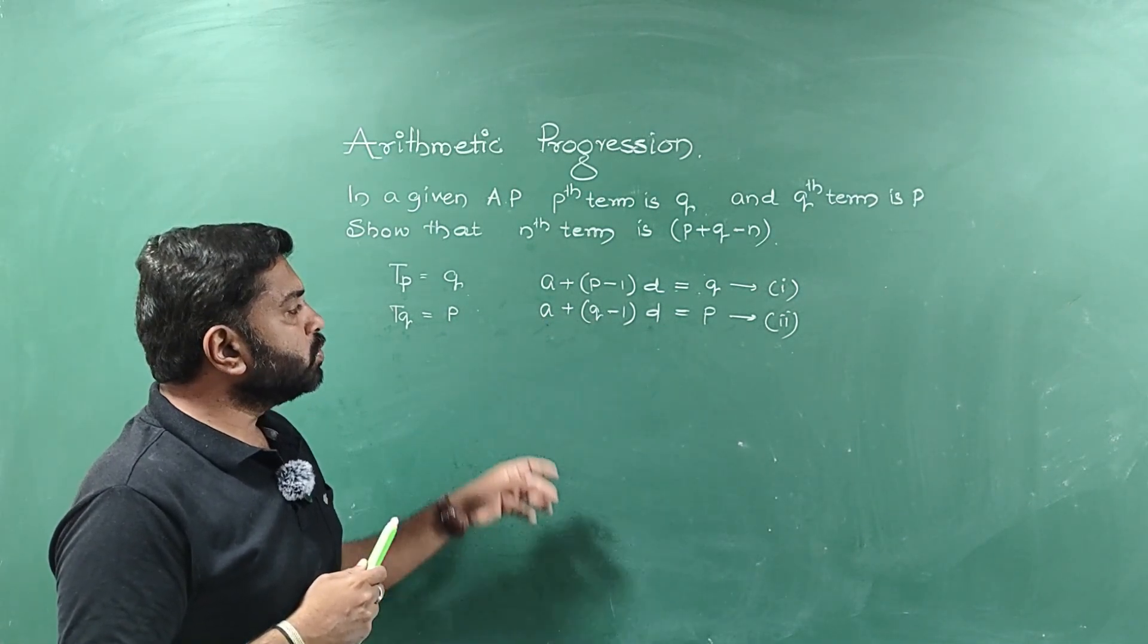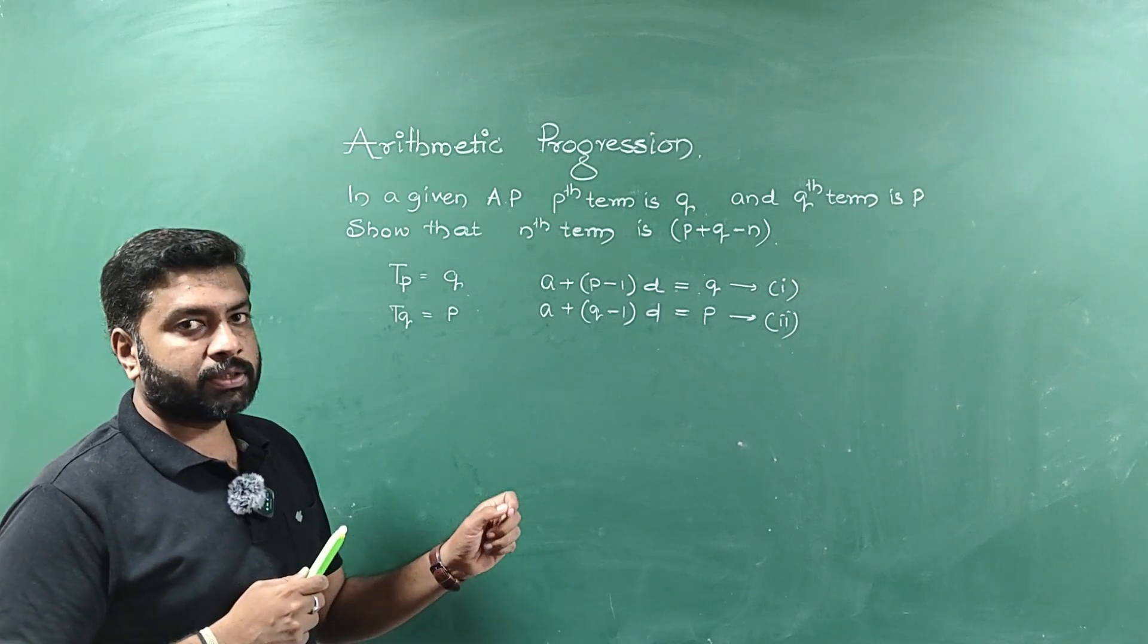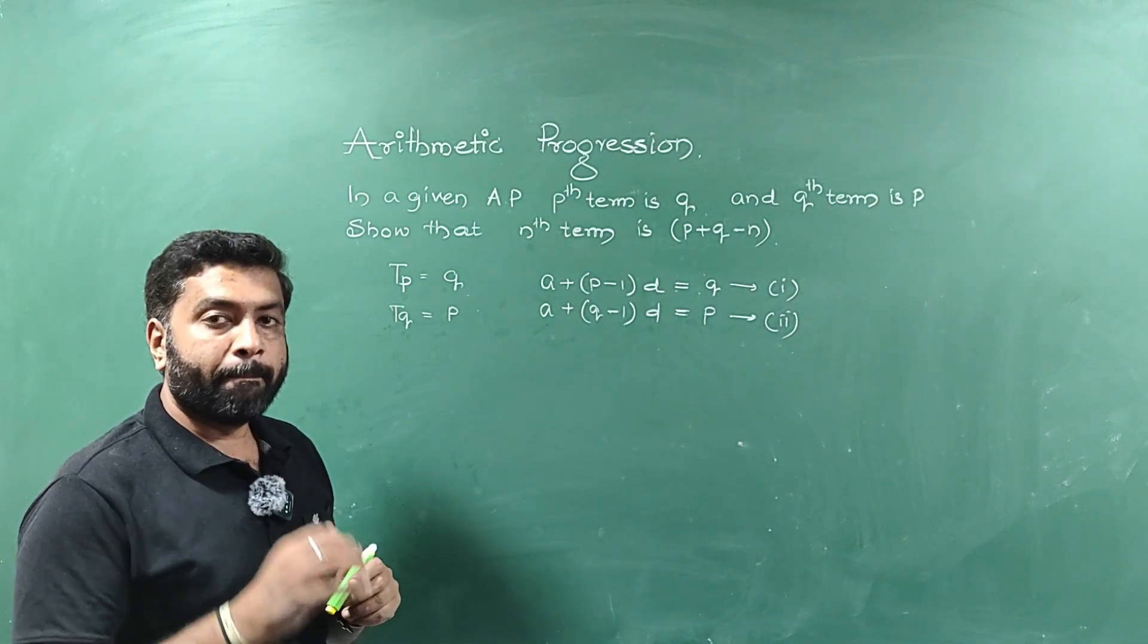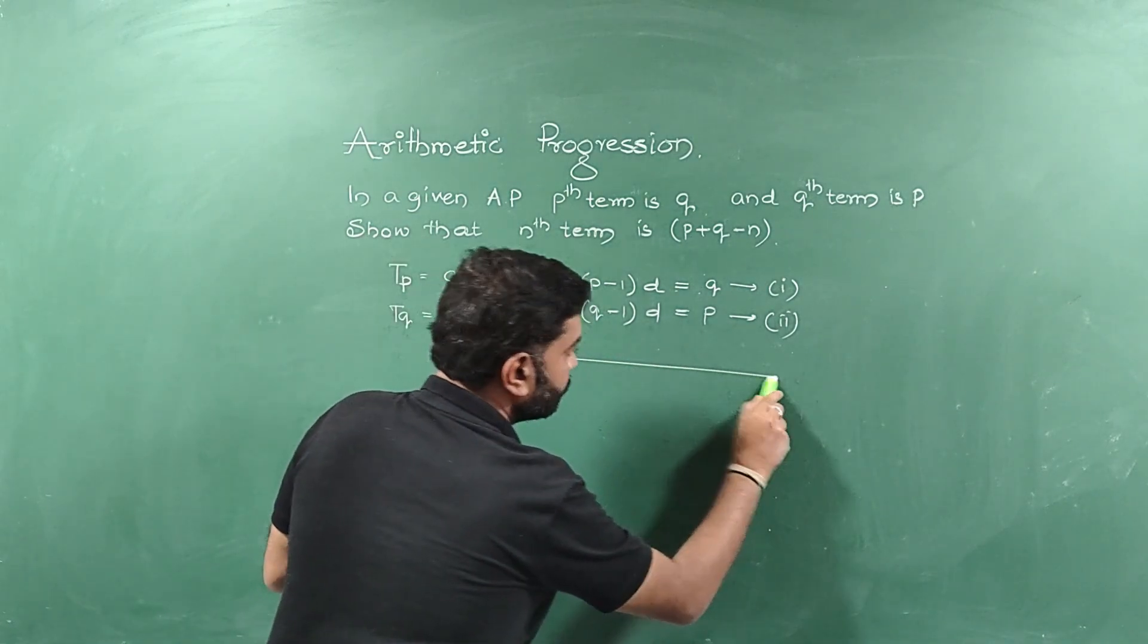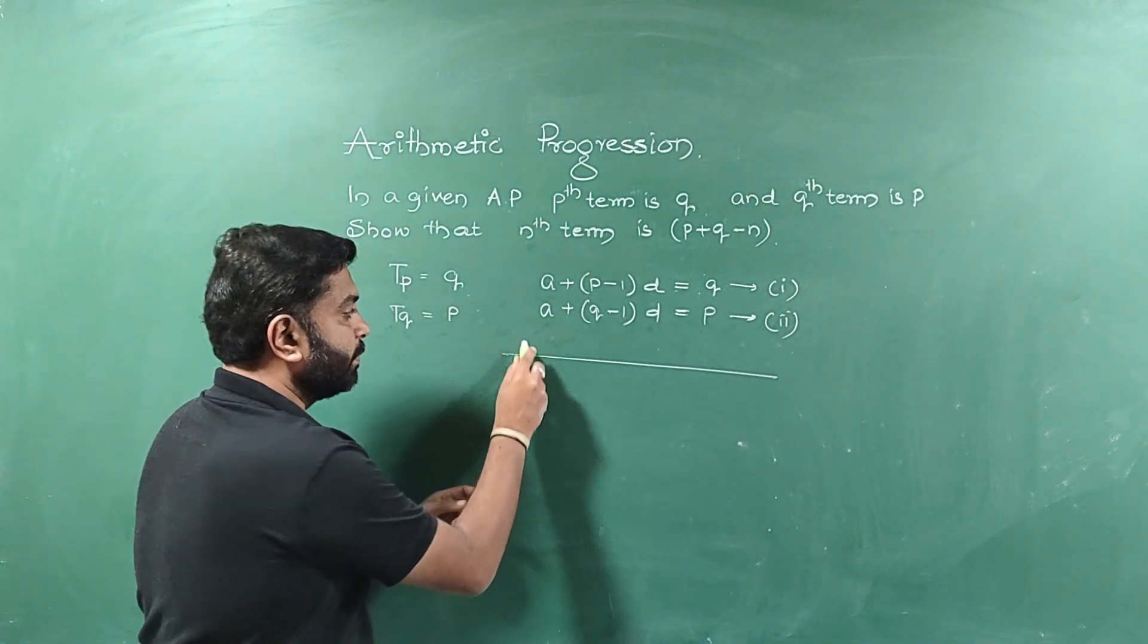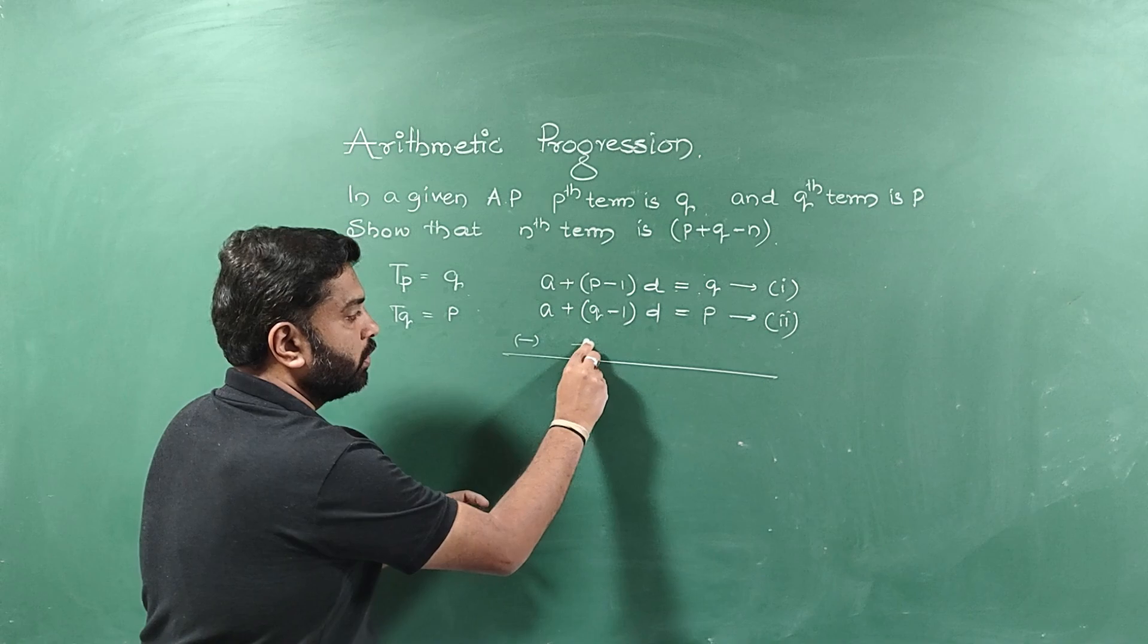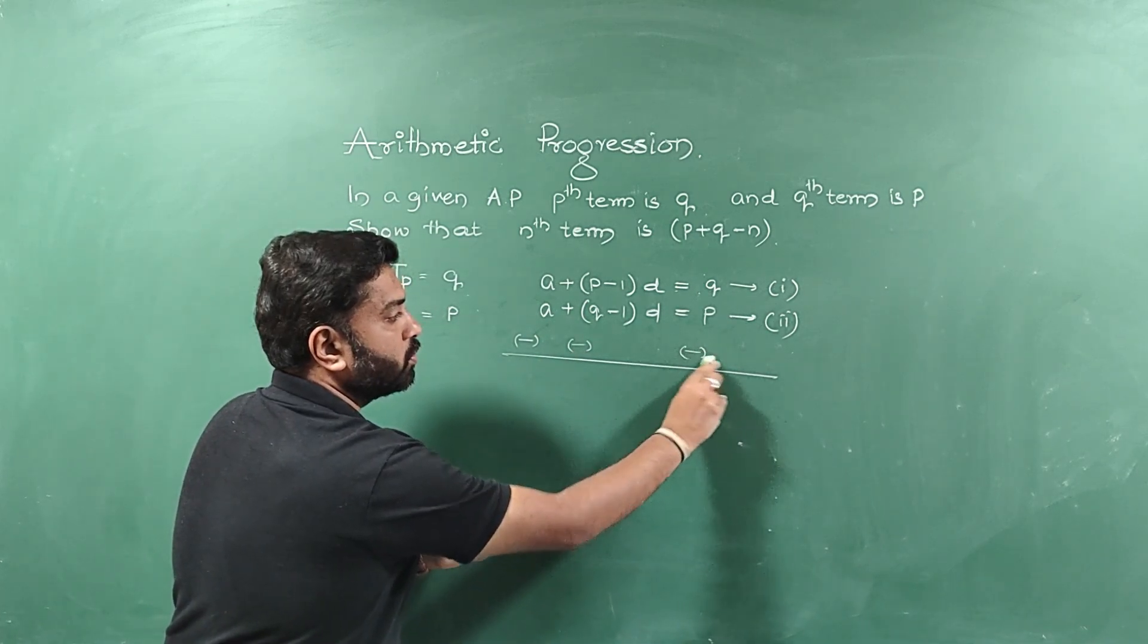So now, I want to solve this. Any method you can go for. Better is elimination. So let's try to solve this using elimination. I want to change the sign. So can I subtract. Here also minus and here also minus.